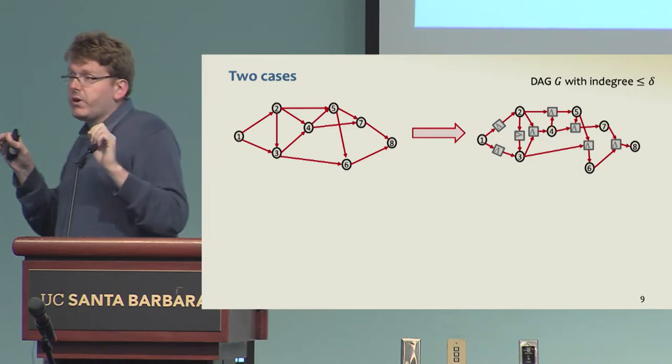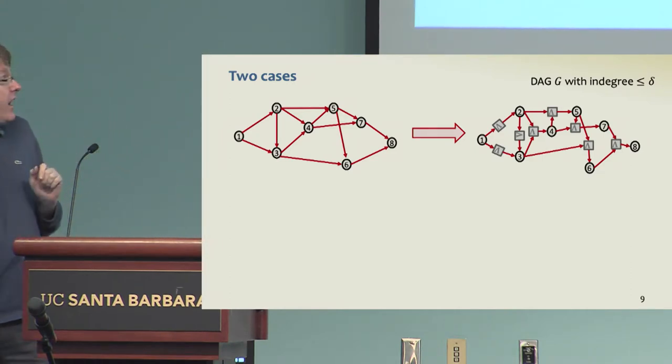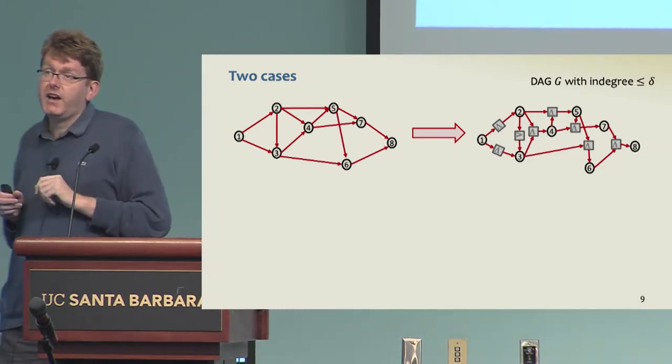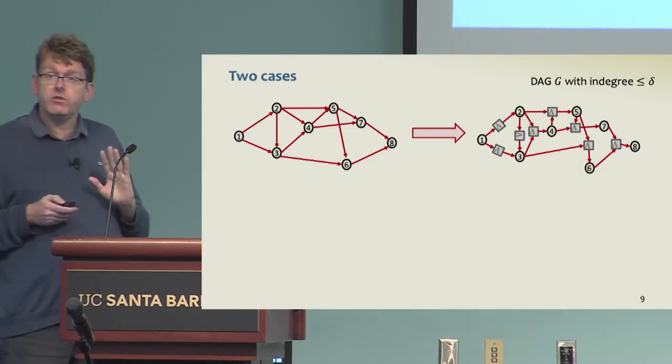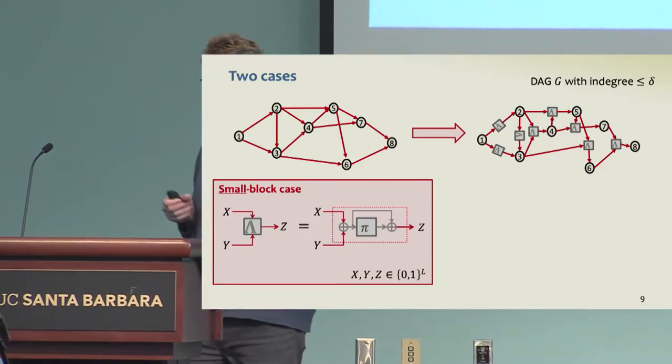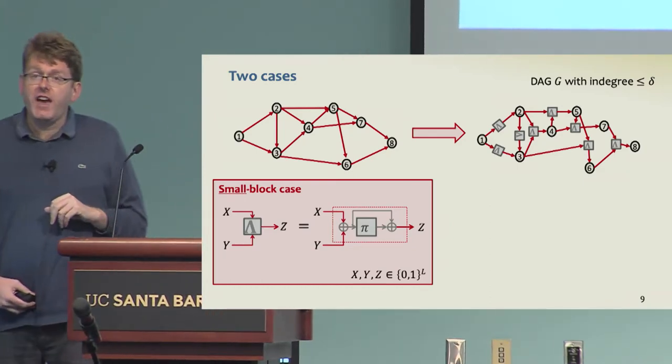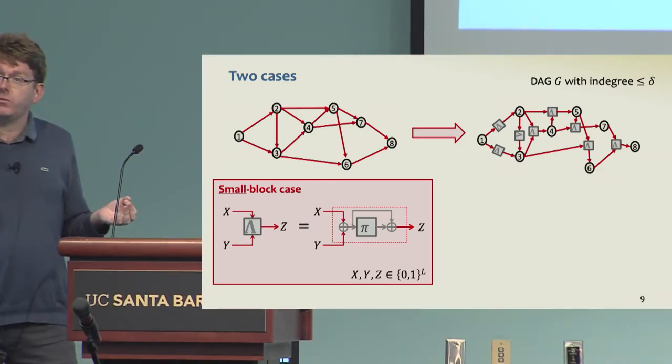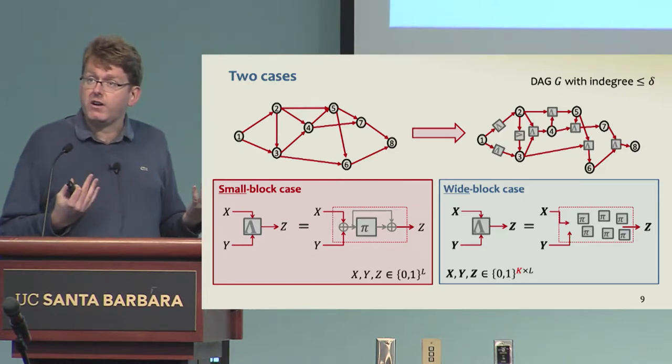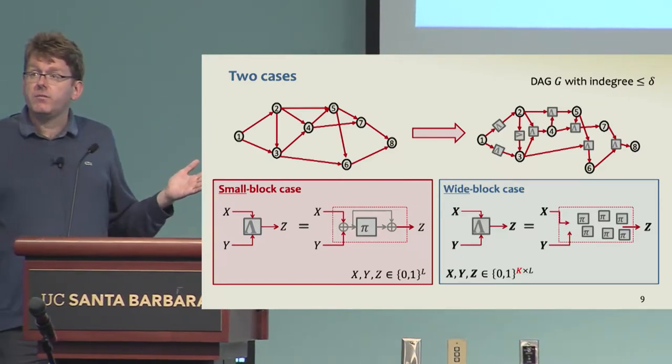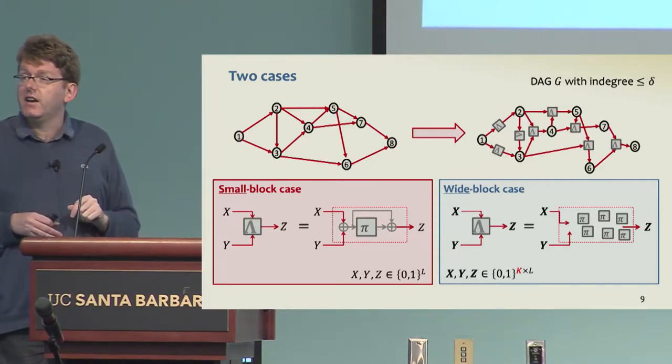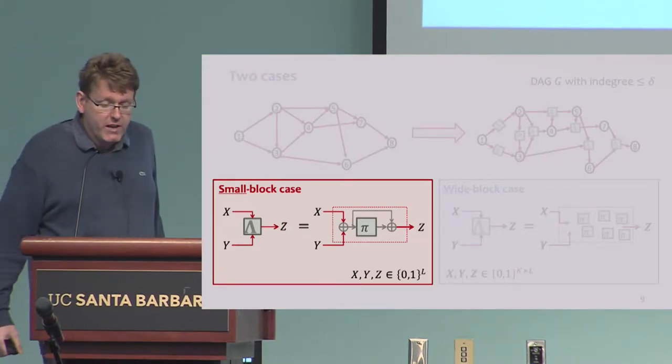The general blueprint here is that we start from some DAG, and now we want to build a memory hard function out of it by instantiating the labeling function from some underlying permutation. Technically, we have to look at two distinct cases. The first one is the small block case, where the labels assigned to vertices have length equal to the input-output length of the underlying permutation. Another case is the wide block case, where the labels are actually much larger by a multiplicative factor K. Hence we have to build something which will make multiple calls to the underlying permutation.